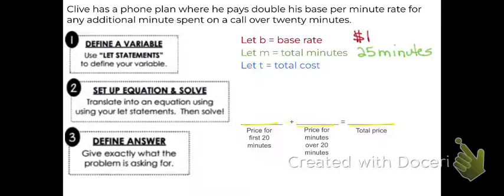Let's come up with how much Clive would be charged per month if his base rate is $1 per minute and he was on his phone for 25 minutes. All right. So the price for the first 20 minutes. So if the base rate is $1, then it is 20 times $1. That's how much it's going to cost you for the first 20 minutes. But how about those additional 5 minutes? Because he was on the phone for 25 minutes. How much does he charge for those additional 5 minutes?